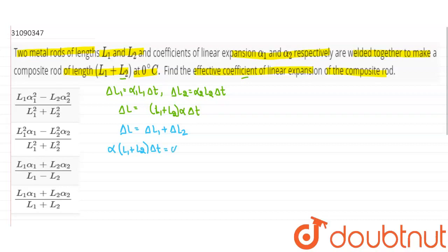Delta L1 that is alpha 1 L1 delta t plus alpha 2 L2 delta t. Delta t cancels out. So here what we need to find out is alpha, which is alpha 1 L1 plus alpha 2 L2 divided by L1 plus L2. This is the coefficient of linear expansion for the composite rod. So our answer is D. D is our correct answer. Thank you.